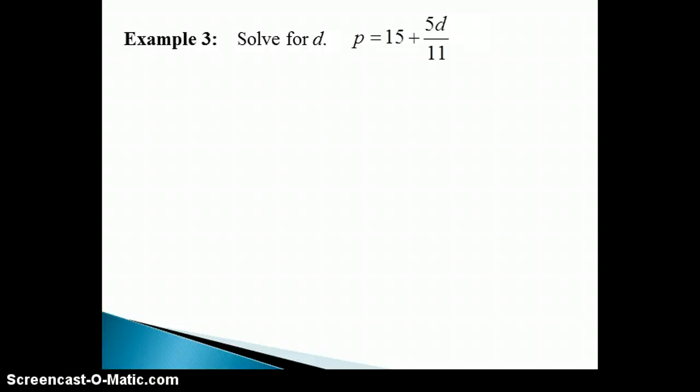In this next example, we are asked to solve for D. Notice that there is a fraction in this formula. Thus, we can multiply both sides by the least common denominator, which is 11, to eliminate the fraction.